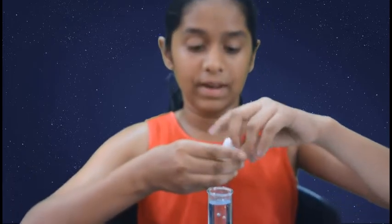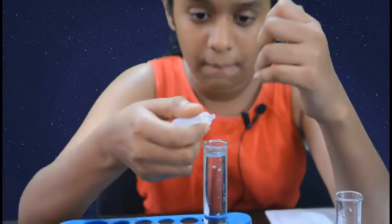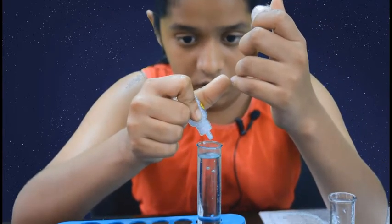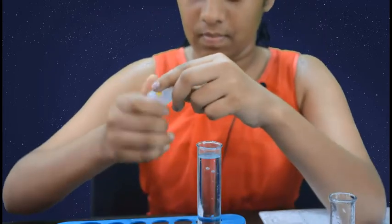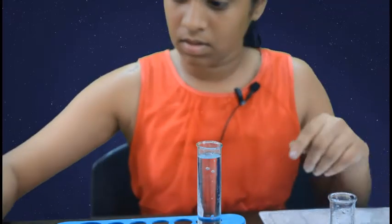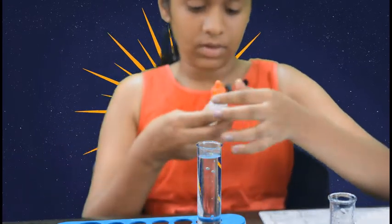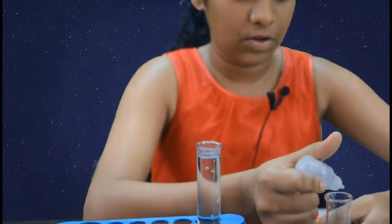First, add two to three drops of phenophthalein and prepare the phenophthalein solution in 50 ml of water. Now let's add two to three drops of sodium carbonate into the conical flask.